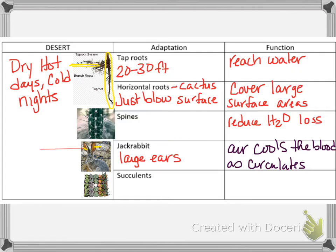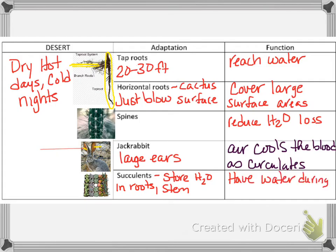Next we have succulents — those little plants you've seen. They store water in the root, the stem, and the fruit. Their function is so that they have water during the dry periods, because you're in the desert and there are dry periods there.